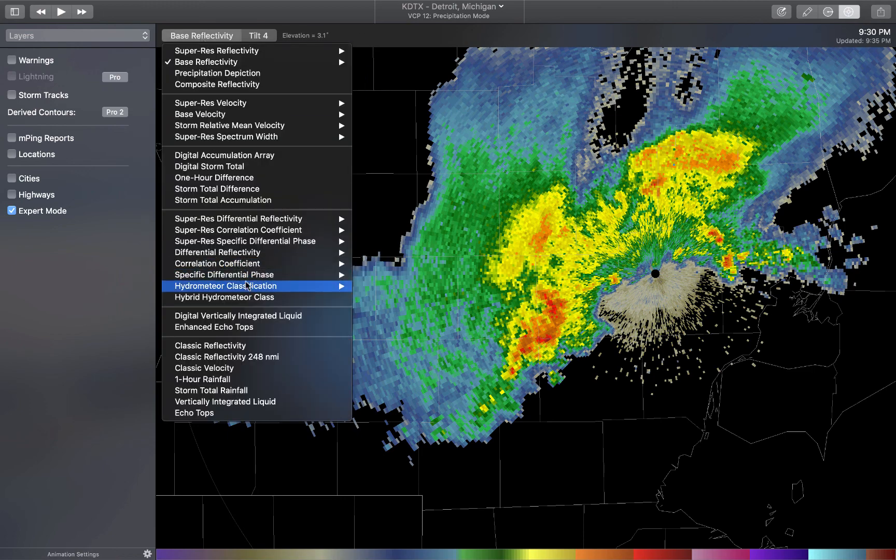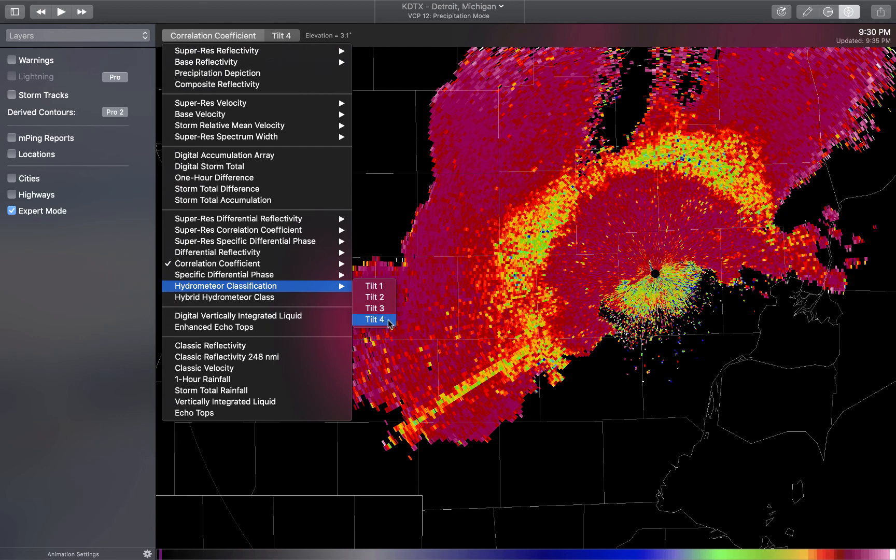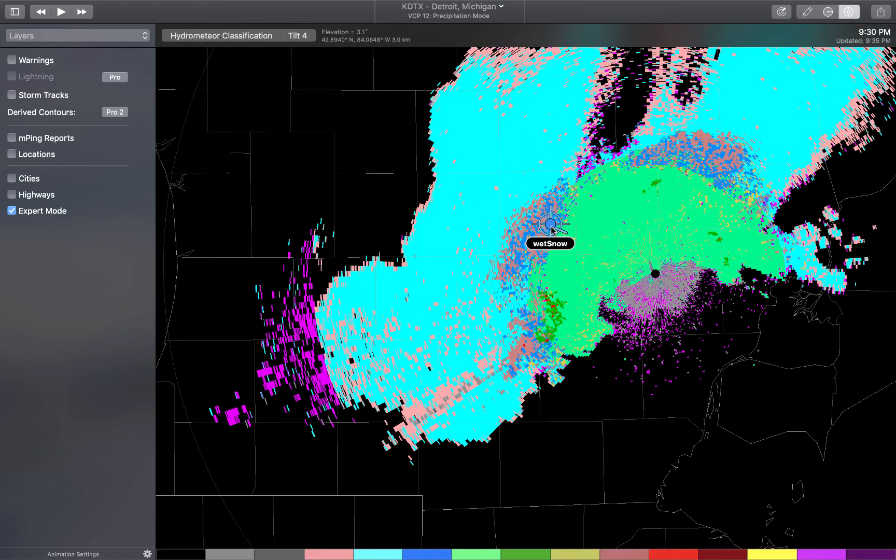But indeed, if we consider the hydrometeor classification in this ring, I'll bring this back up again and then show the hydrometeor classification. We'll see that this is an area where there is a lot of ice hydrometeor, graupel, wet snow, that surrounds this area of light to moderate rain that is lower down in the atmosphere as the ray is closer to the radar in this location.